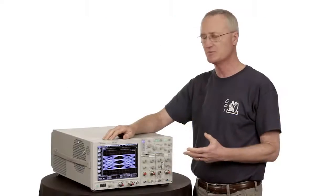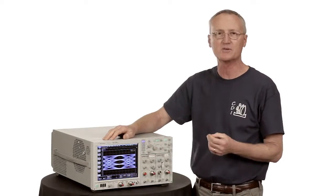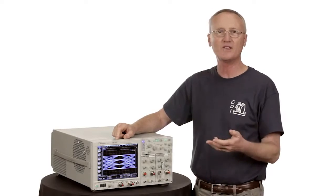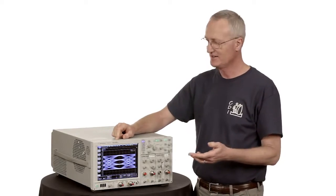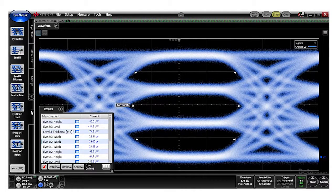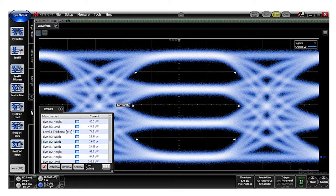Many of the PAM-4 measurements that are made on that eye diagram are similar to what was done on the NRZ eye, things like eye width, eye height, except that if you notice here, instead of an eye width, there are three eye widths. There are three eye heights. So when you press the eye width measurement, it reports three values.